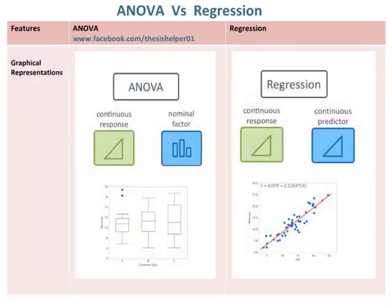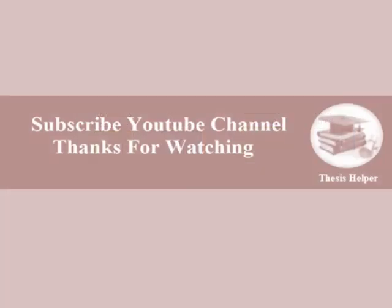The graphical representation of ANOVA and regression are given for comparison. ANOVA focuses on a continuous response with a nominal factor, visualized using a whisker box plot. Whereas, regression focuses on a continuous response with a continuous predictor, visualized as a line graph between X and Y. Kindly subscribe to the YouTube channel Thesis Helper. Thanks for watching.